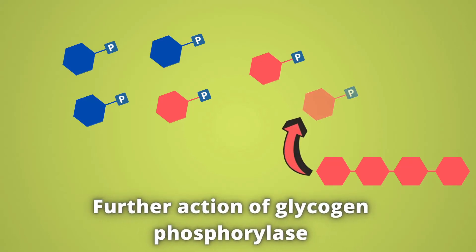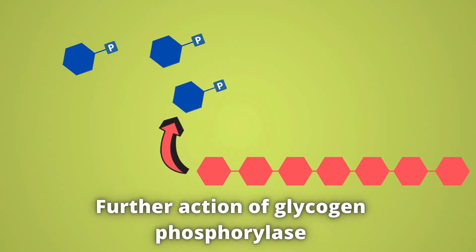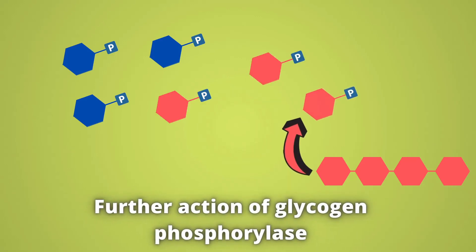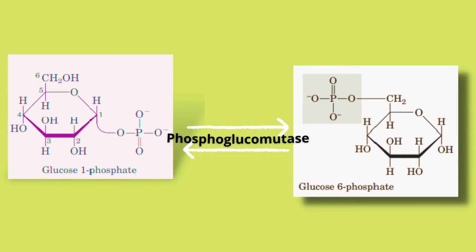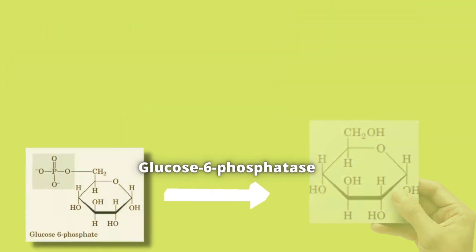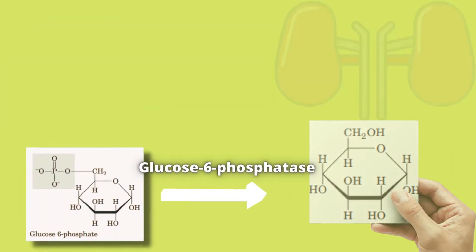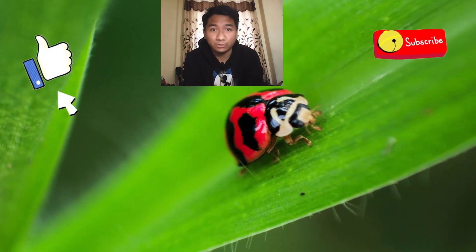Once the branches are transferred and the single glucose residue is cleaved at the branch point, glycogen phosphorylase then resumes its activity and further breaks down glycogen, releasing glucose residues as glucose-1-phosphate from the main chain. Again, glucose-1-phosphate will either enter glycolysis in muscle cells, or be converted into glucose-6-phosphate by phosphoglucomutase in the liver, where glucose-6-phosphatase breaks it down into free glucose — and that is how our bodies increase blood glucose level between meals. That is all about glycogenolysis.